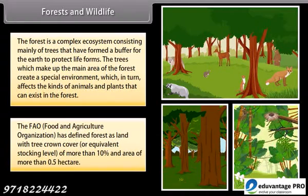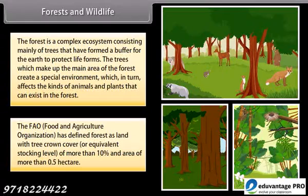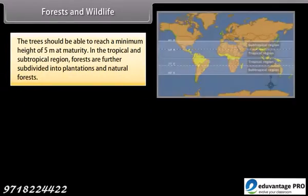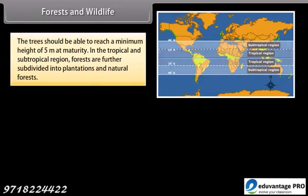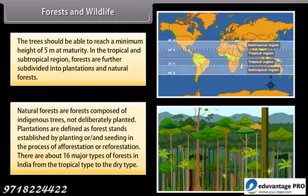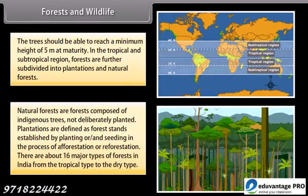The FAO, Food and Agriculture Organization, has defined forest as land with tree crown cover or equivalent stocking level of more than 10% and area of more than 0.5 hectare. The trees should be able to reach a minimum height of 5 meters at maturity. In the tropical and subtropical region, forests are further subdivided into plantations and natural forests. Natural forests are composed of indigenous trees not deliberately planted, while plantations are established by planting or seeding in the process of afforestation or reforestation.